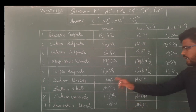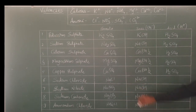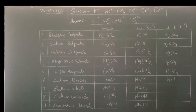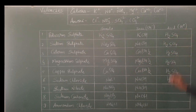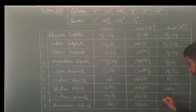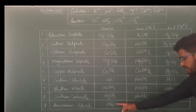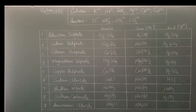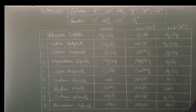Here we have Cl⁻ combined with H⁺ — a very famous chemical — giving HCl, hydrochloric acid. Then nitrate combined with H⁺ gives HNO₃, nitric acid. Carbonate combined with hydrogen gives H₂CO₃. And again Cl⁻ with H⁺ gives HCl.